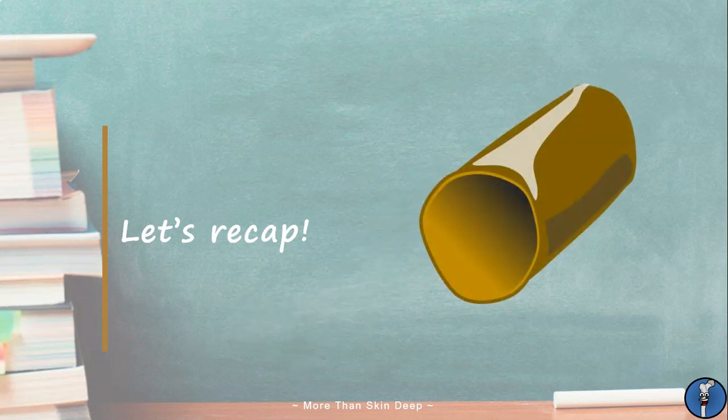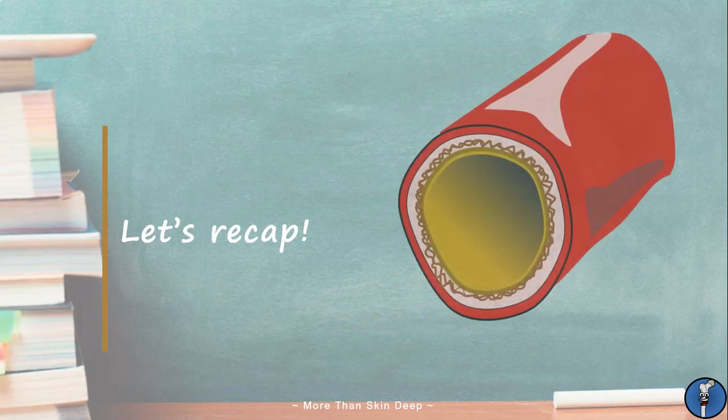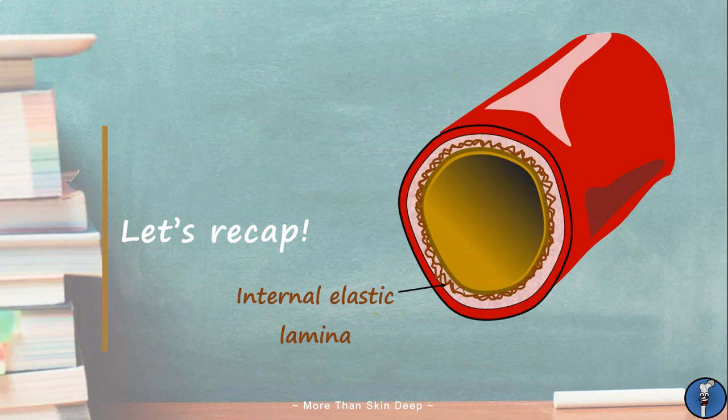Capillaries are the simplest blood vessels and their walls are composed only of a single layer of stratified squamous cells known as the endothelium and the basement membrane. Arterioles are more complex and have an internal elastic lamina and a smooth muscle filled tunica media.